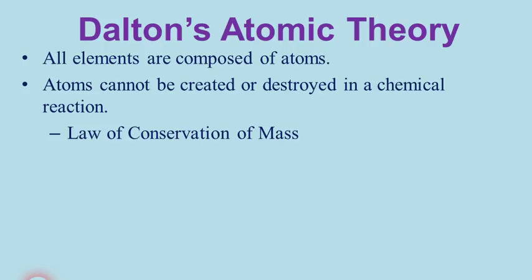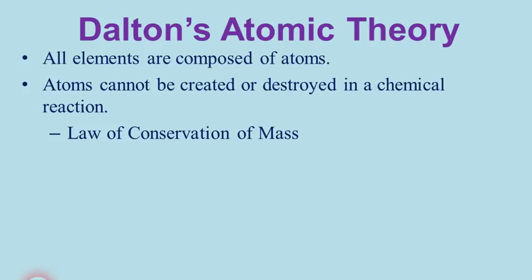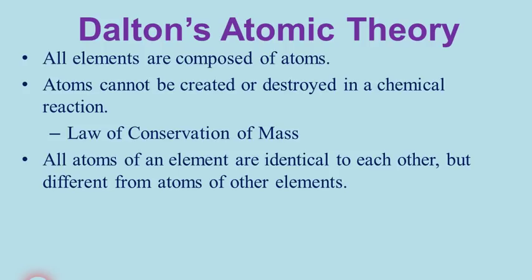The third part is that all atoms of an element are identical to each other, but different from atoms of other elements — mostly Dalton's own idea. The fourth part is that all compounds have a constant ratio of atoms of elements, based on Proust's law of definite proportions. Dalton explained that compounds don't vary in their mass ratios because they're made up of a non-changing ratio of very specific atoms — like water, which is always two hydrogens and one oxygen, or H2O.